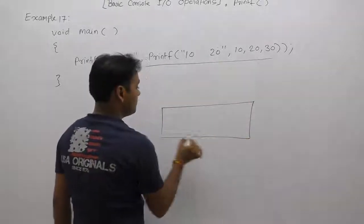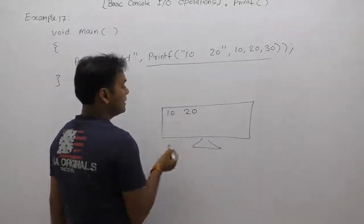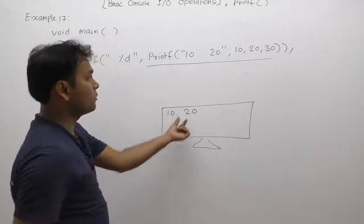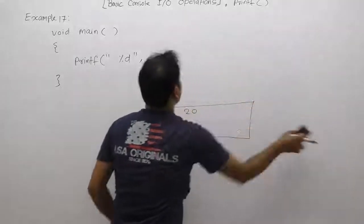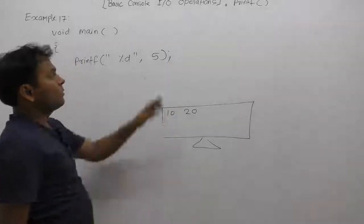Then the final output or final message printed by inner printf function becomes 10 space 20. How many symbols? 1, 2, 3, 4, 5. Space is also counted. Final symbols counted are 5.